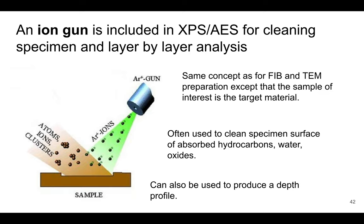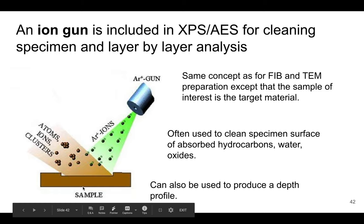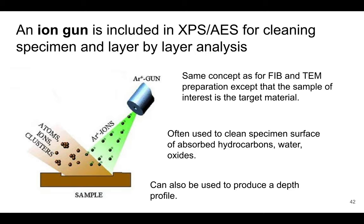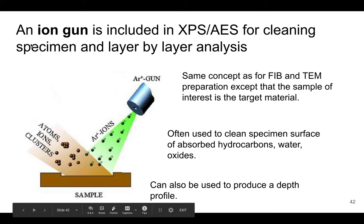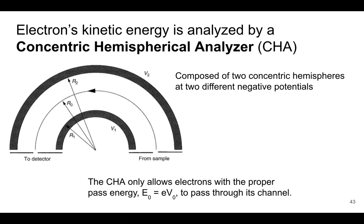The ion gun can also be used for depth profiling. After cleaning the surface and collecting an XPS or AES spectrum, if we want to look further into the material, we apply the ions again to sputter away more material and analyze the next layer. So even though XPS and AES are surface-sensitive techniques, we can probe deeper into the material by sequentially removing surface layers.